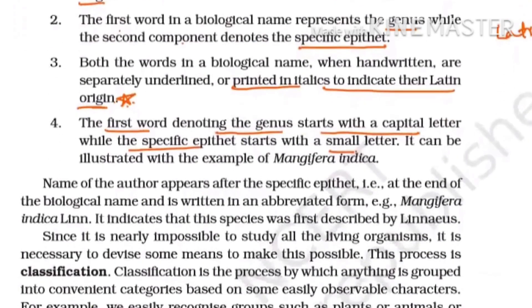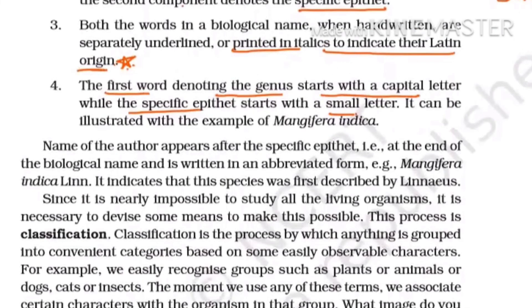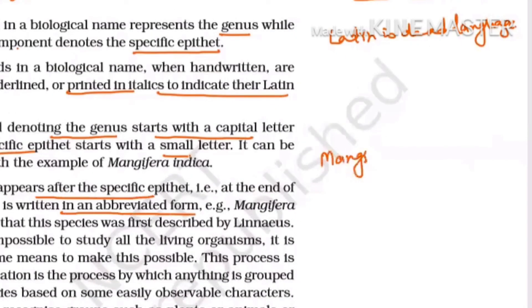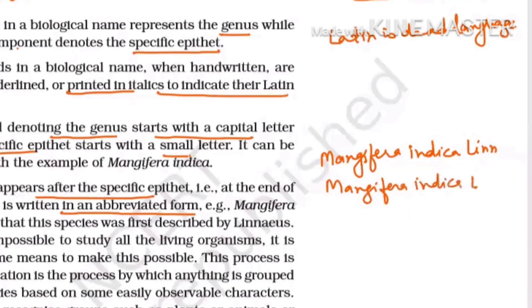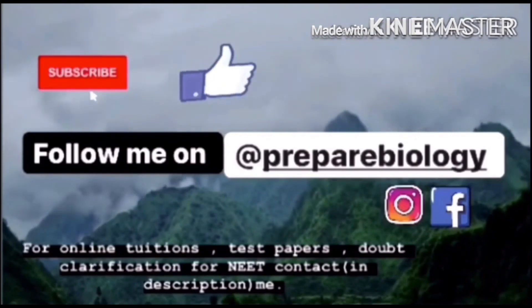Additionally, the name of the author can appear after the specific epithet in abbreviated form. For example, Mangifera indica L. — where 'L.' stands for Linnaeus with a dot, indicating abbreviation. If the dot is missing, it is incorrect. In an MCQ asking which is the correct name, you would select the option that includes the abbreviated author name with the dot, not without it.